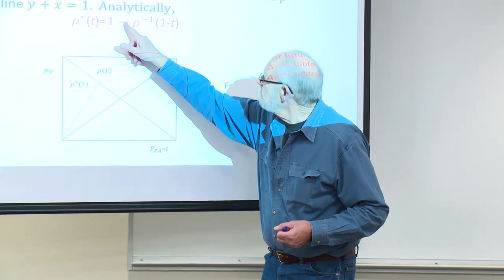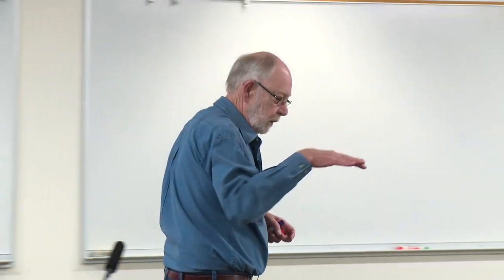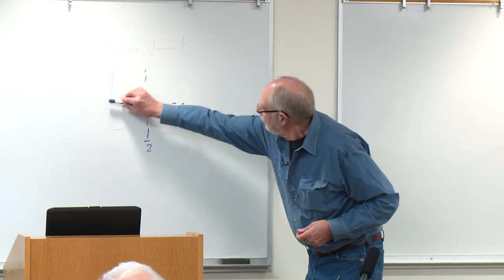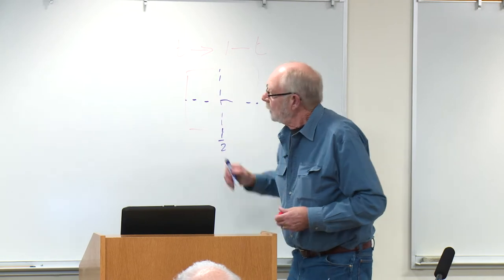One minus the function is a reflection in this axis. The one minus t is a reflection in the vertical axis.